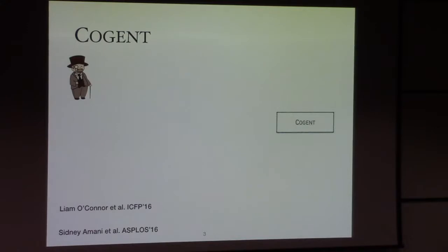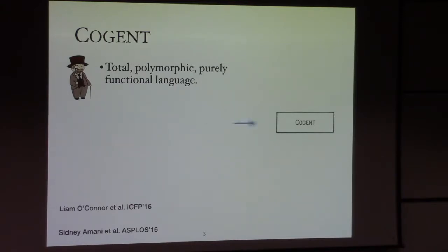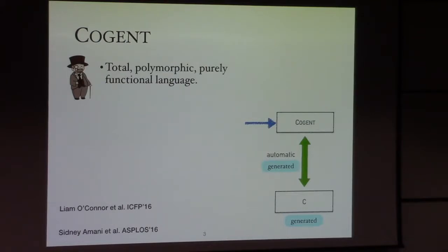Cogent is a total polymorphic pure functional programming language. System programmers write their systems code in the Cogent language, and the Cogent compiler compiles that to high-performance C. At the same time, a proof is generated by the compiler showing that the C implementation correctly implements the semantics of the Cogent program.